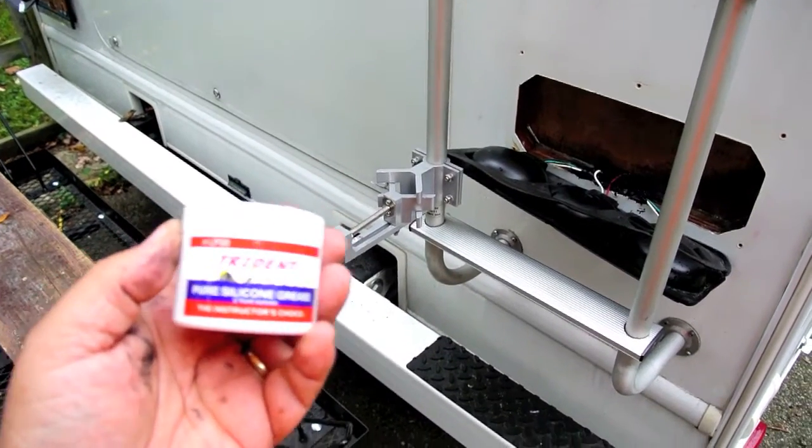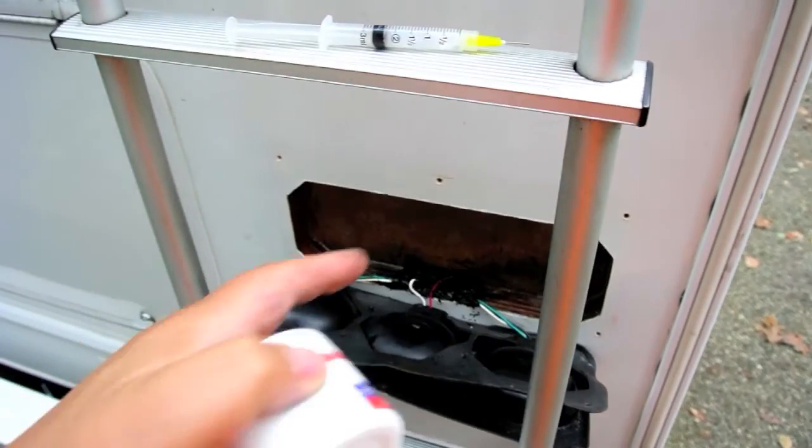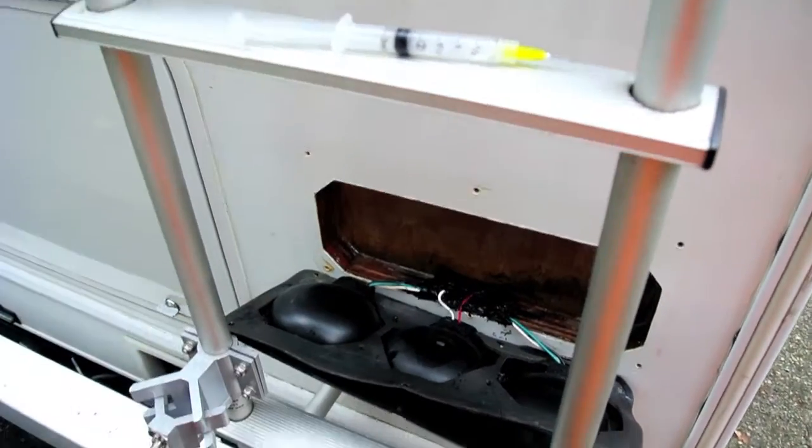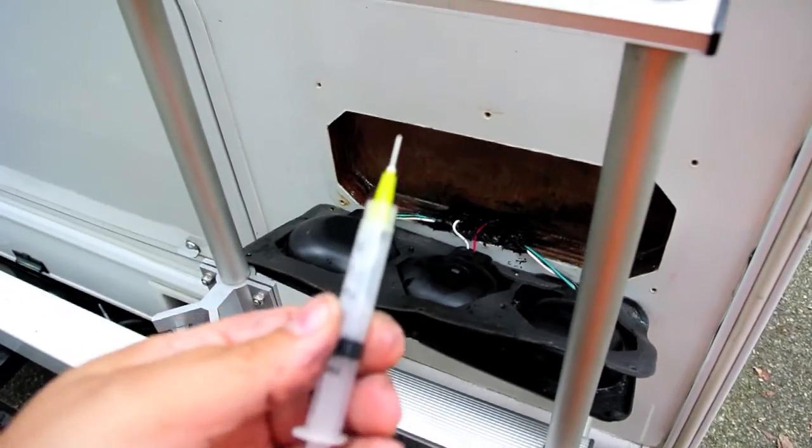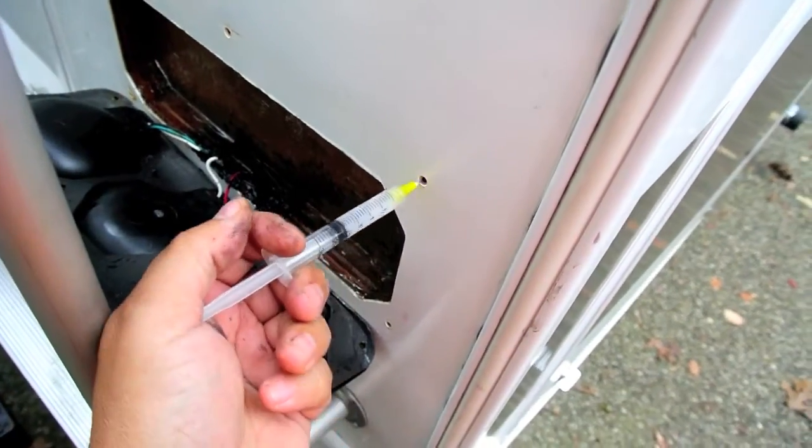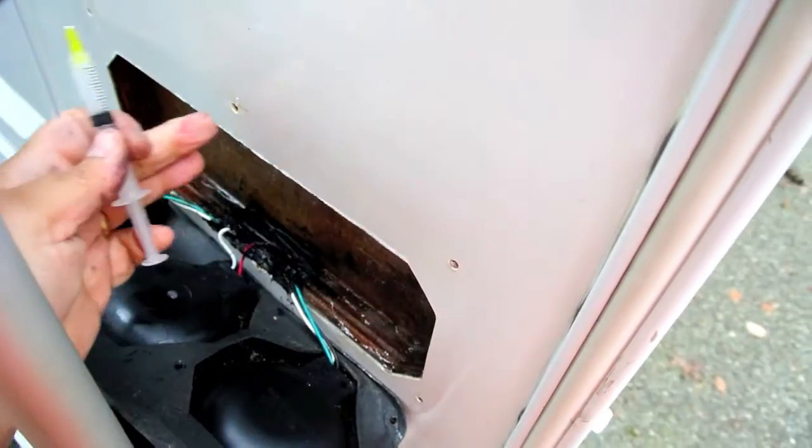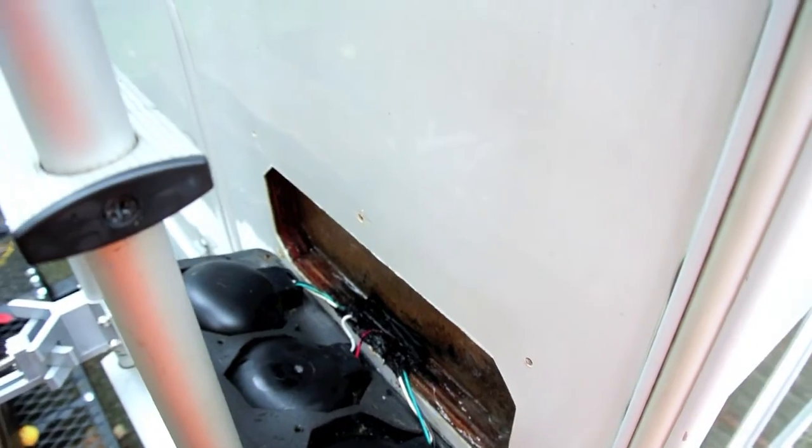Well I've decided for now to use this pure silicone grease to help waterproof the screw holes. What I did is I just filled some in a syringe here and I'm just going to go along to each one of these and just fill some in here. When I put the screws in that will help waterproof the screw holes.